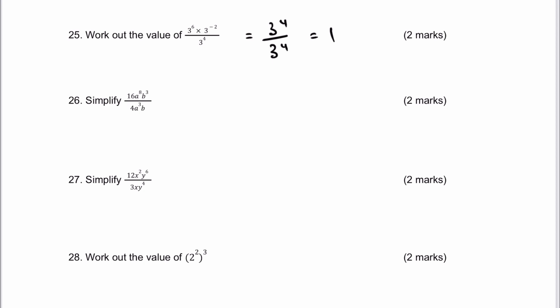Number 26 has already been laid out for us. 16 divided by 4 is 4. A to the power of 8 divided by A to the power of 3 is A to the power of 5. Then B to the power of 3 divided by B to the power of 1 — effectively B on its own — is going to be B to the power of 2. If it says B on its own, it means B to the power of 1.